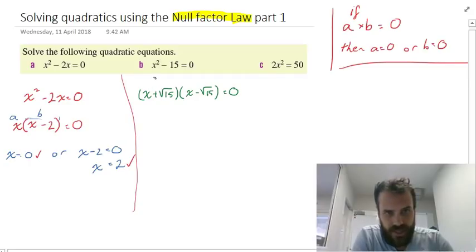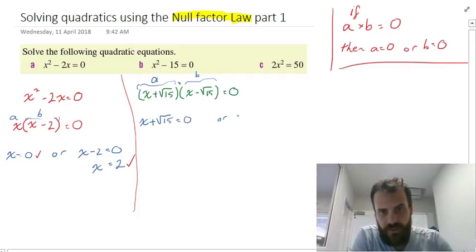This says (x + √15) times (x - √15) equals zero. So that means that x + √15 must equal zero, or x - √15 equals zero.